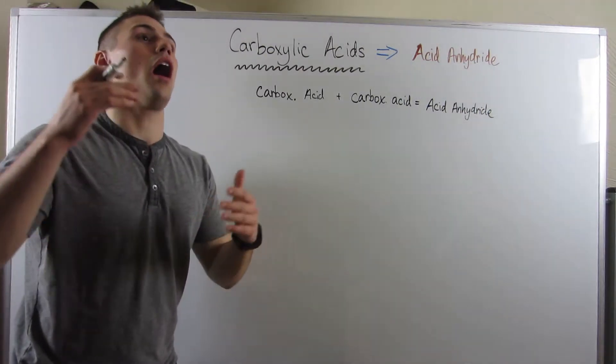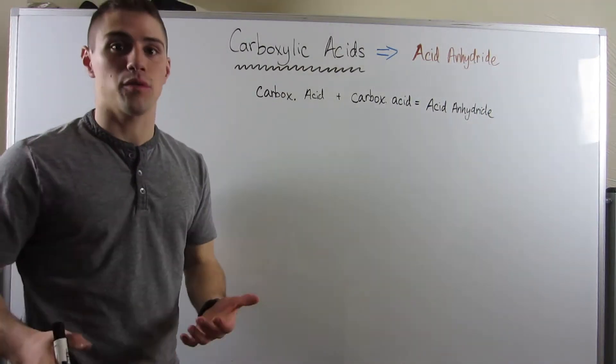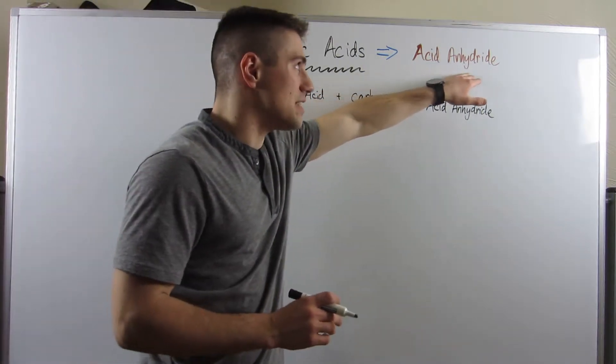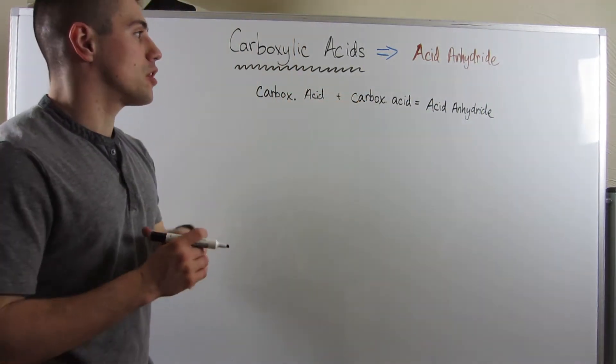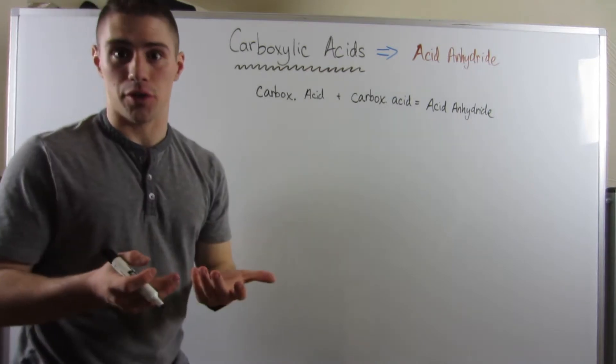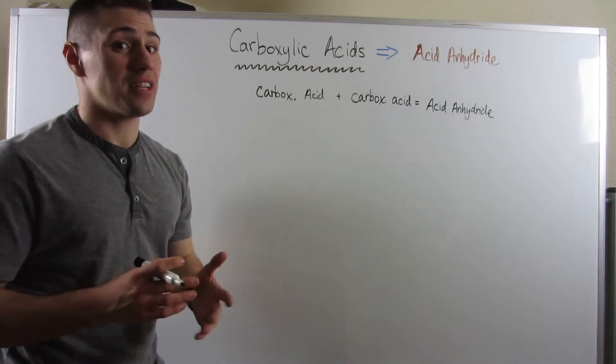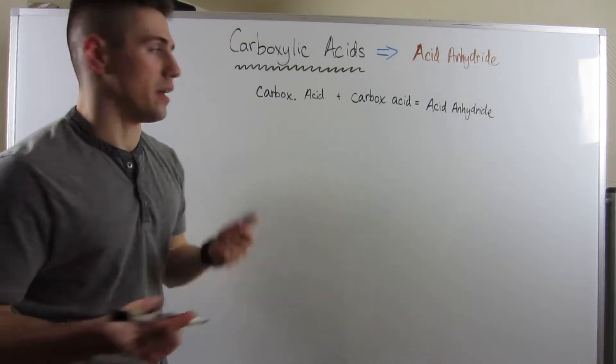Okay, gang. So another functional group we can make from carboxylic acids is something called an acid anhydride. Let me show you what that is first, and then we can go through the mechanism, and I think you'll be excited to see you already basically know it.